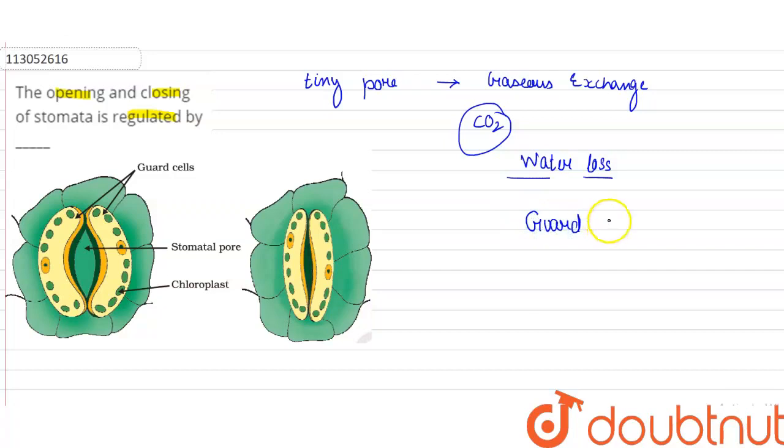To prevent water loss, the pores need to open and close. This is regulated by guard cells. When guard cells swell, the pore opens. When they shrink, the pore closes. So the answer is guard cells.